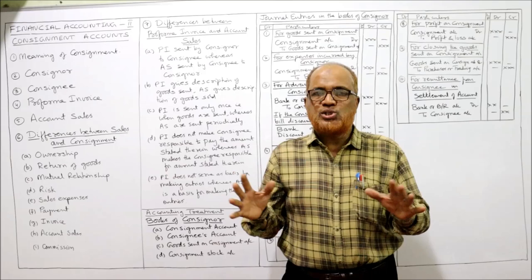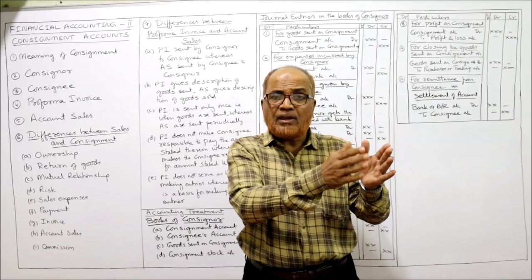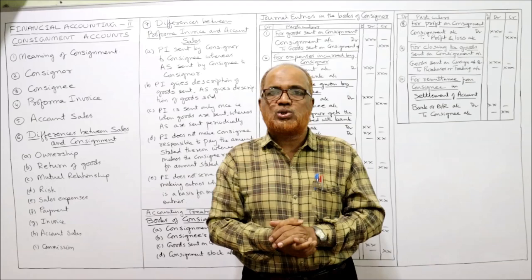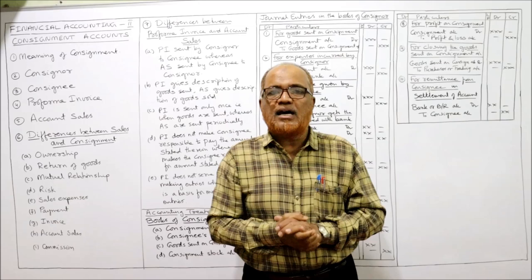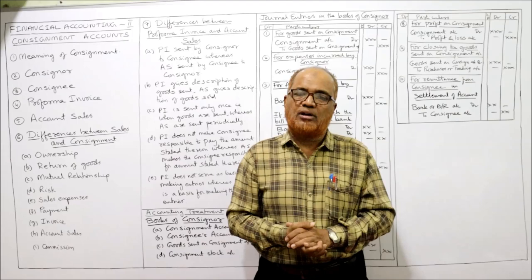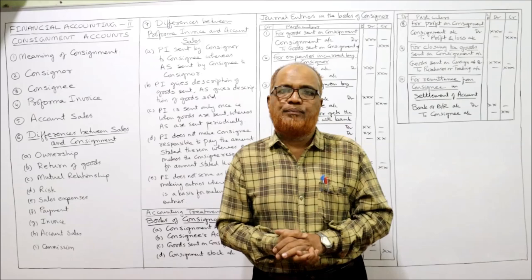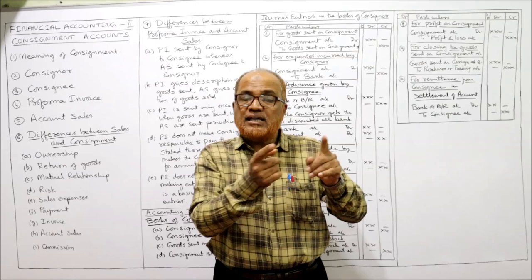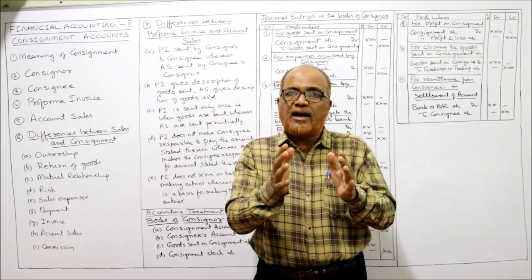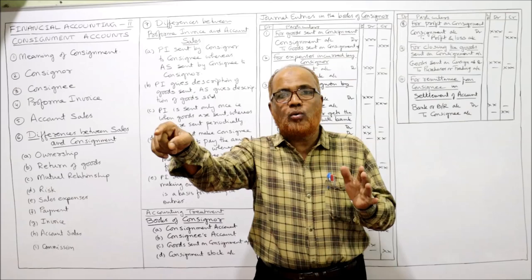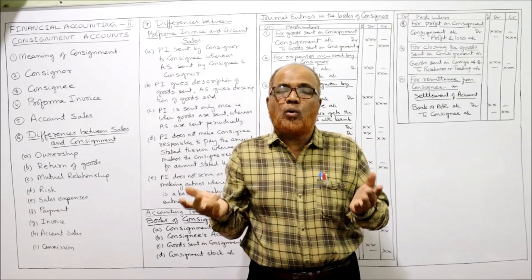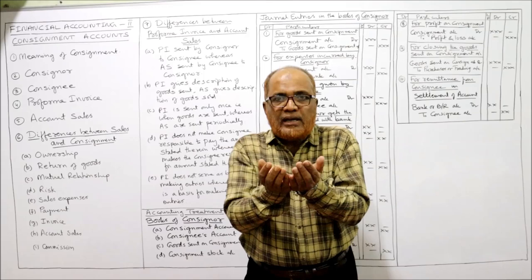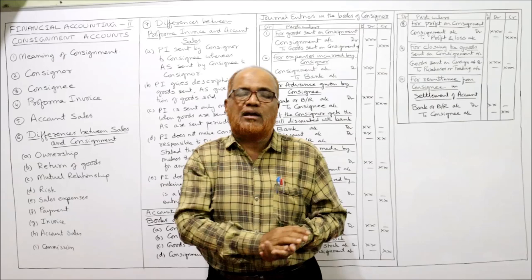In simple words, a Consignment is a process in which one person sends goods to another person, who has to sell the goods and remit the amount to the sender. The Consignee works on behalf of the Consigner for commission, which is normally calculated as a percentage of sale proceeds. By receiving the goods, the Consignee does not become the owner — the risk of unsold goods remains with the Consigner, because ownership stays with the Consigner only.